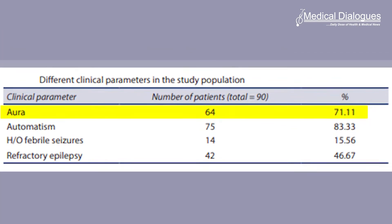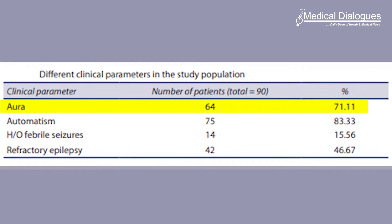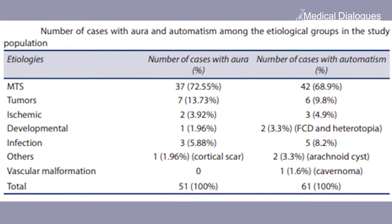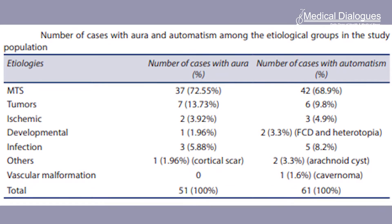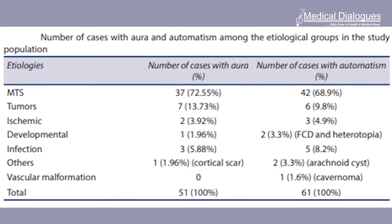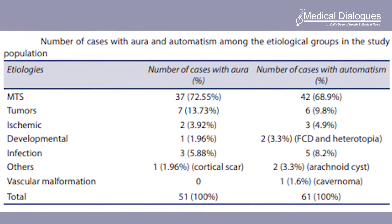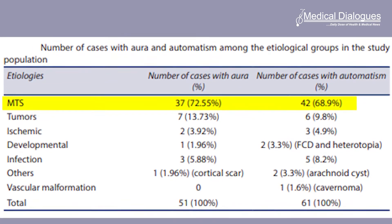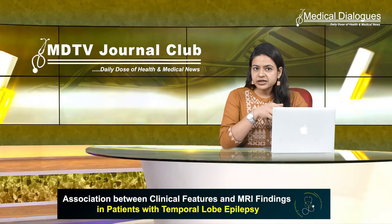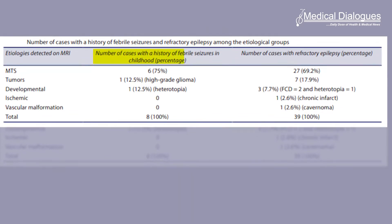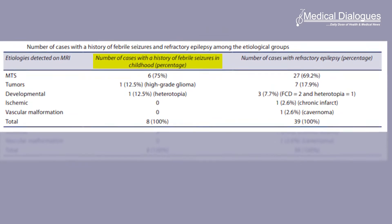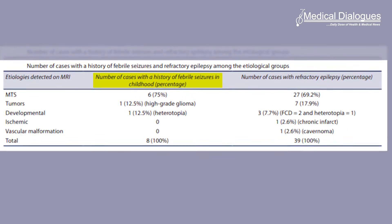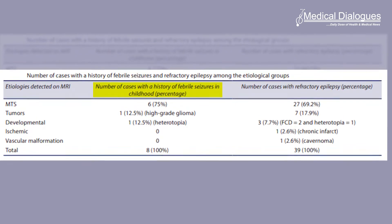Four out of five patients had an aura, whereas 70% had automatisms. The findings highlighted that the presence of aura in temporal lobe epilepsy patients was significantly associated with mesial temporal sclerosis on MRI. The presence of automatisms as well as a history of childhood febrile seizures did not have a significant association with any specific etiological finding on MRI.